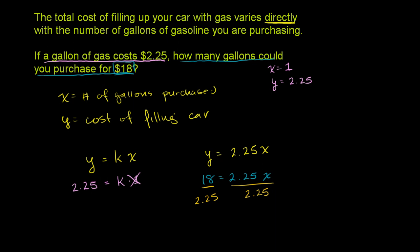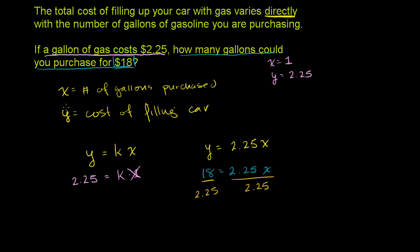And what do we get? Let me scroll down a little bit. The right-hand side, the 2.25s cancel out. You get x. And then what is 18 divided by 2.25? So let me write this down. So first of all, I just like to think of it as a fraction. 2.25 is the same thing. Let me write it over here.